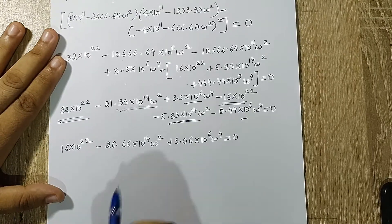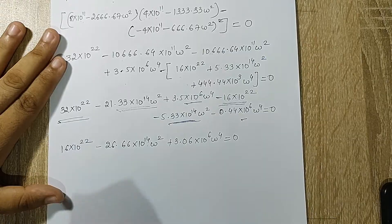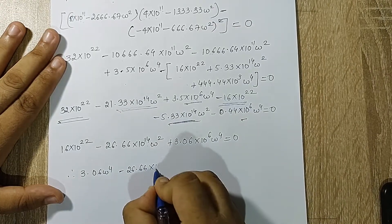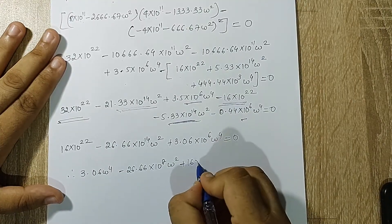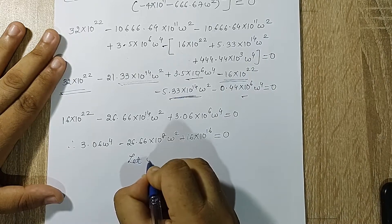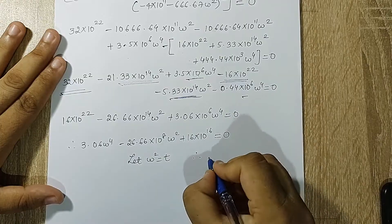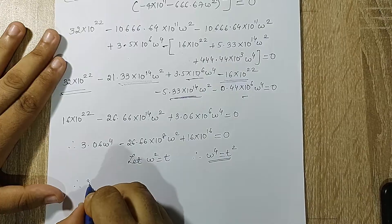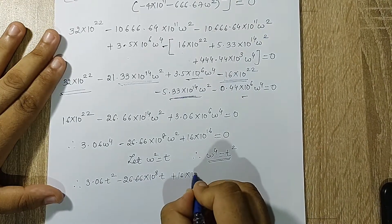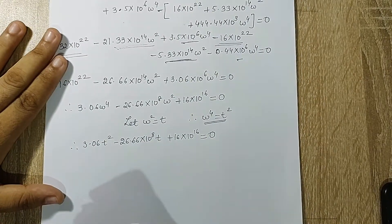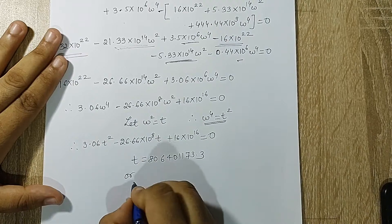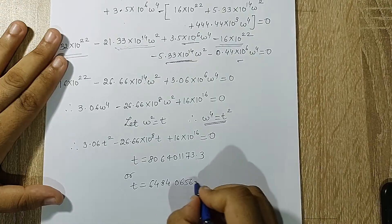Dividing throughout by 10⁶ (common factor): 3.06·ω⁴ − 26.66×10⁸·ω² + 16×10¹⁶ = 0. Using substitution t = ω² (so ω⁴ = t²): 3.06t² − 26.66×10⁸·t + 16×10¹⁶ = 0. Solving with a calculator gives t = 806,401,173.3 or t = 64,840,656.77.